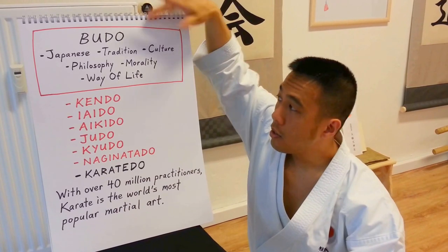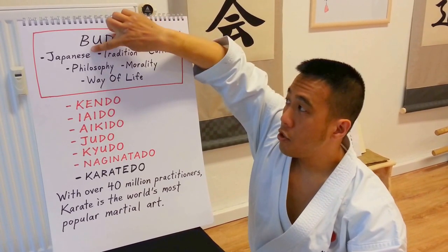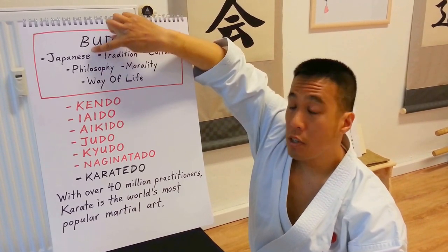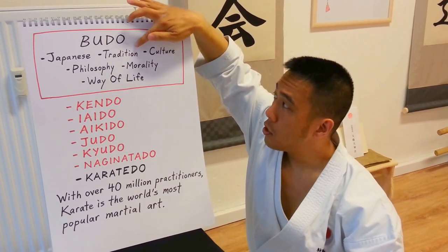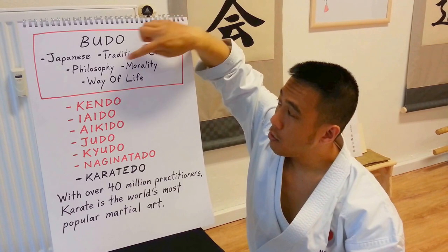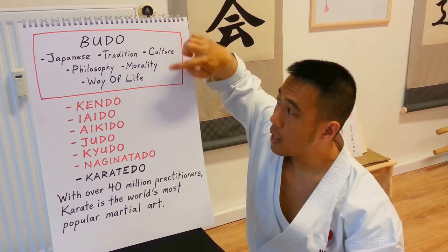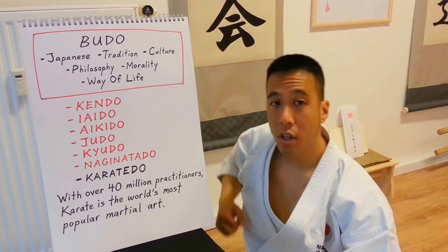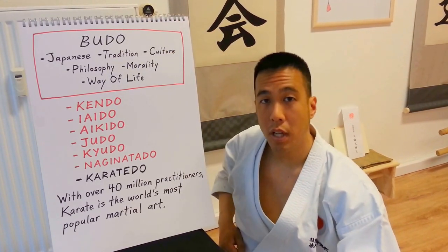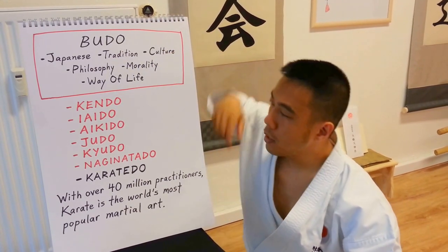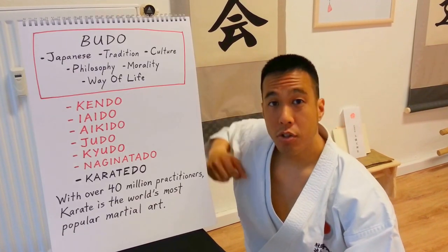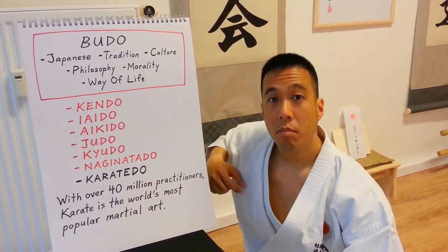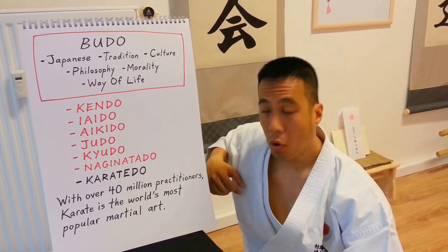How to recognize Budo? It is Japanese in origin. It teaches aspects of tradition, culture, philosophy, and morality, and is a general way of life. There are seven main branches of modern Budo.